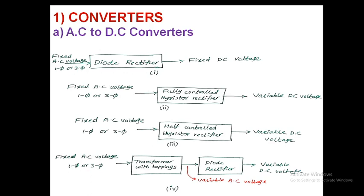The fourth one: for the same fixed AC voltage, single phase or three phase, by using transformers with tappings, we get different AC voltage levels — variable AC voltage. From that variable AC voltage we get variable DC voltage. So input is fixed, output is variable; in between the transformer and diode bridge rectifier give the variable AC voltage, from which we get variable DC voltage.